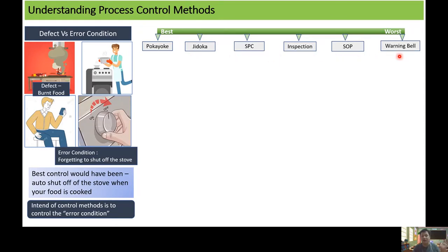...and inspection, SOP, and warning bell are towards the worst side. So now you can ask me a question whether this ranking is provided by me, but the answer is this ranking is not provided by me but this ranking is explained in this manner in the fundamentals of Six Sigma. So let us understand quickly each of these control methods to understand what are those control methods and why they are rated either best or worst.